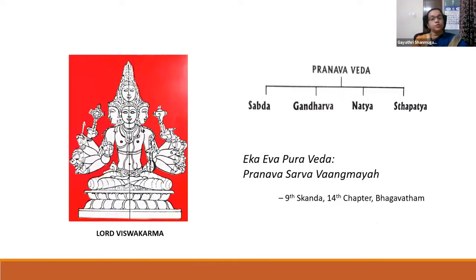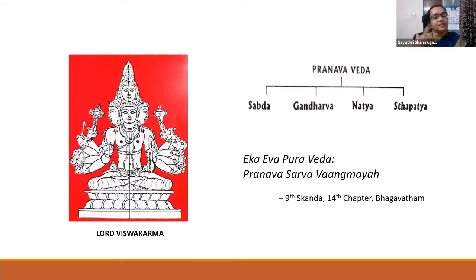Moving on to the iconography of Lord Vishwakarma — why is he seen in such a posture? In the sculptural tradition, a deity is given form according to its Dhyana Shloka. According to his Dhyana Shloka, the Shilpirishis meditated upon the Lord, received a vision, and accordingly envisioned and sculpted his image. He is with five faces — Sadhyajata on top and the other four facing the four directions — with ten hands and weapons in each hand.